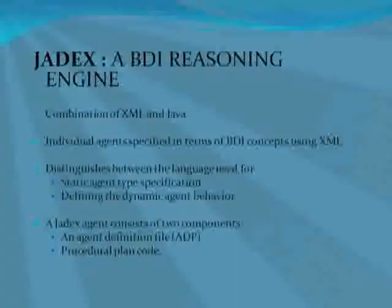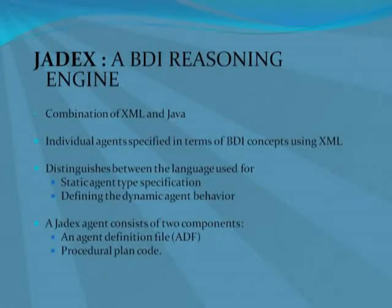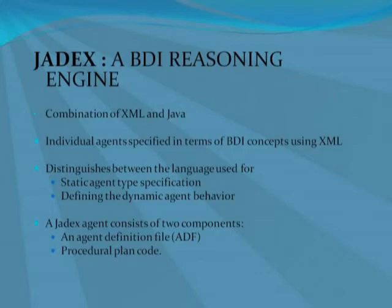Let's look at JDEX. The JDEX programming language is a combination of XML and Java. The XML notation allows programmers to specify individual agents in terms of BDI concepts. The BDI concepts are then implemented as Java programs. JDEX is neither based on a new agent language nor does it revise an existing one.